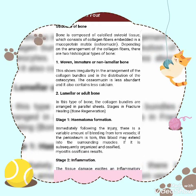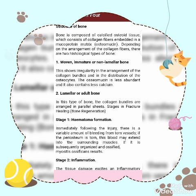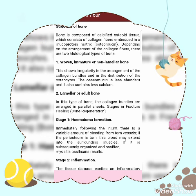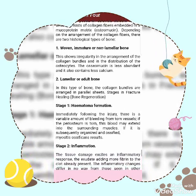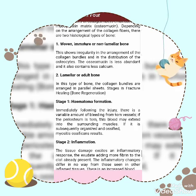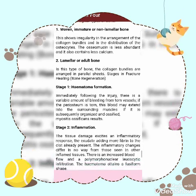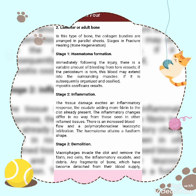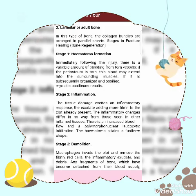Structure of bone: bone is composed of calcified osteoid tissue which consists of collagen fibers embedded in a mucoprotein matrix called osteomucin. Depending on the arrangement of collagen fibers, there are two histological types of bone. The first is woven, immature, or non-lamellar bone, which shows irregular arrangement of the collagen bundles and distribution of osteocytes. The osteomucin is least abundant and it also contains the least calcium.